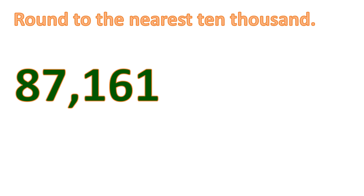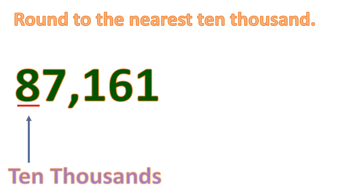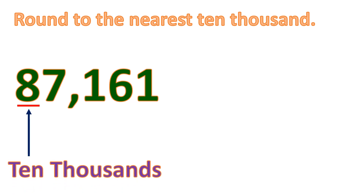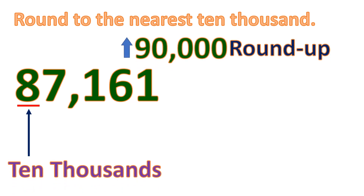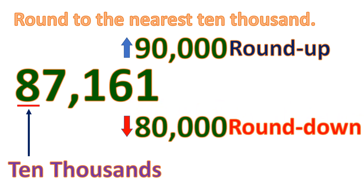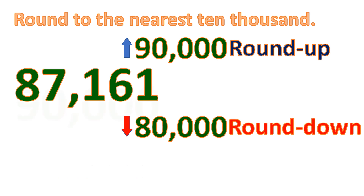Now, what if we round 87,161 to the nearest 10,000? We focus on the digit in the ten-thousands place. It will either round up to 90,000 or round down to 80,000. Looking at the number to the right, since it is 7, we round up to 90,000.